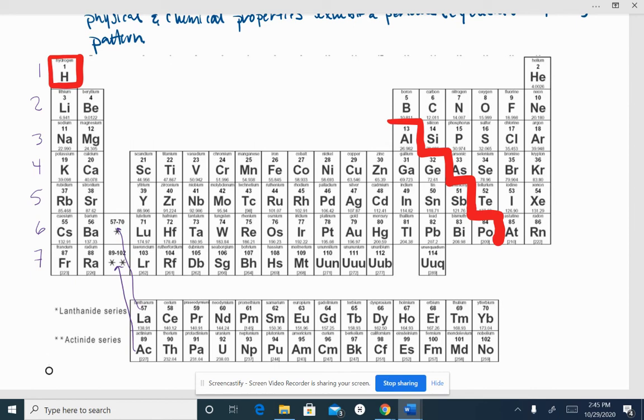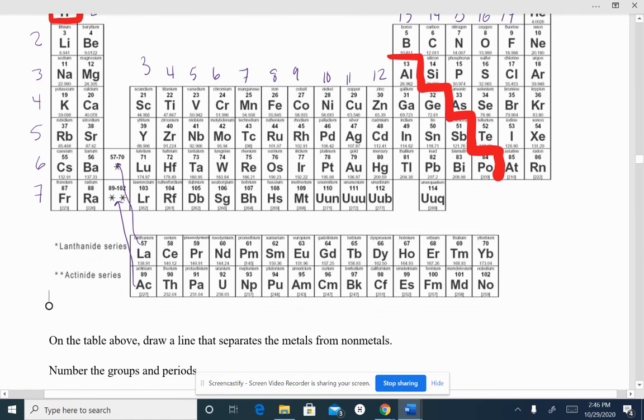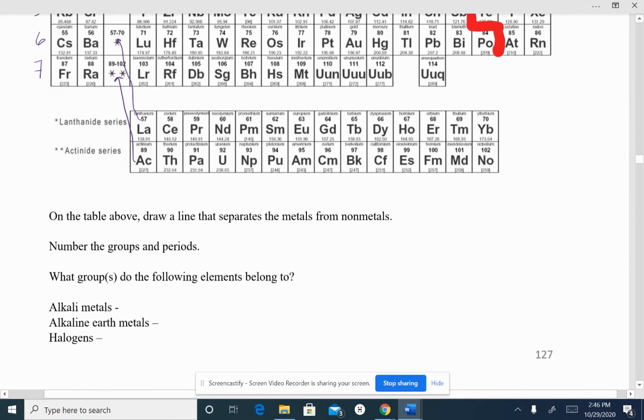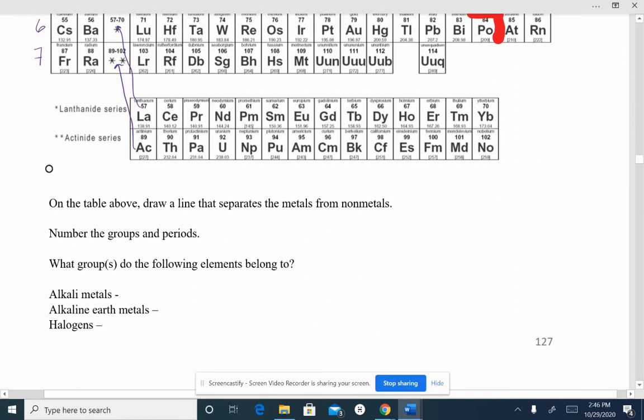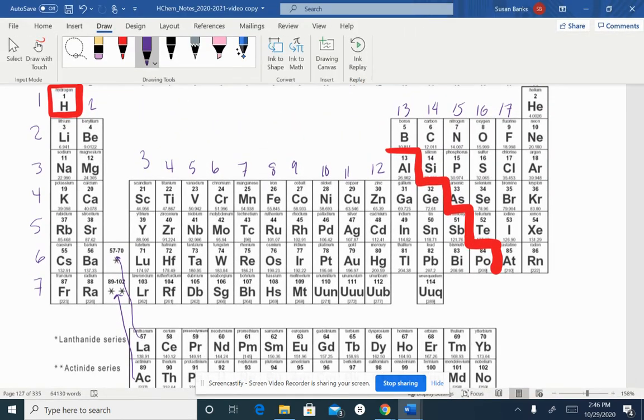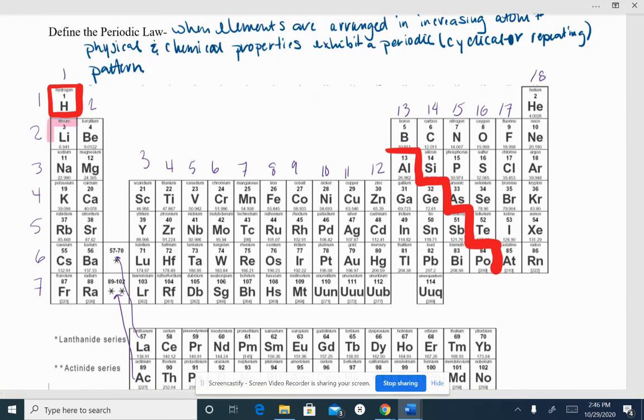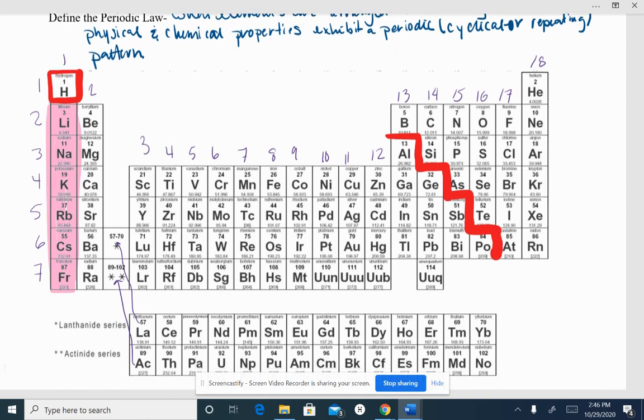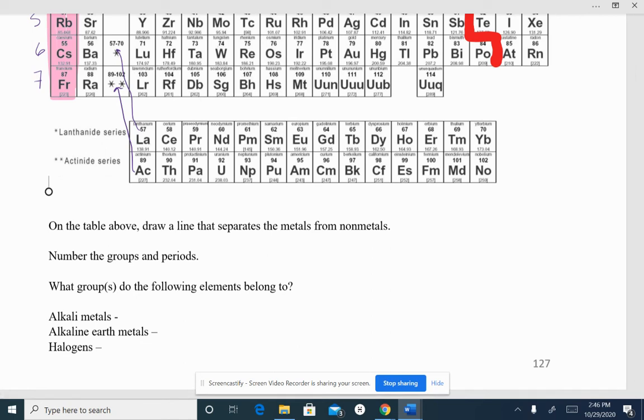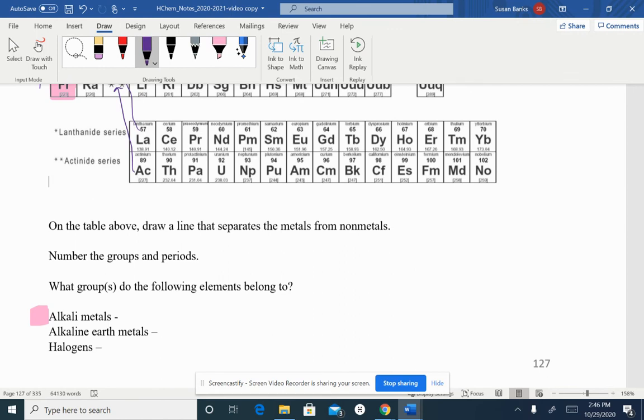Let's number the groups and the periods. So the periods: 1, 2, 3, 4, 5, 6, and 7. Now remember that lanthanum goes right in here, and actinium goes right in here. And then our groups, we have 1, 2, 3, 4, 5, 6, and so on. So we have 7 periods, and we have 18 groups.